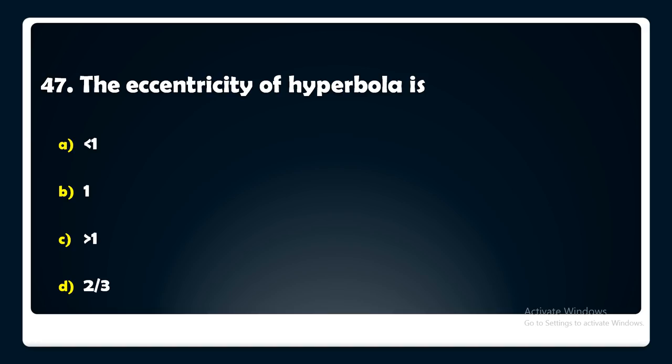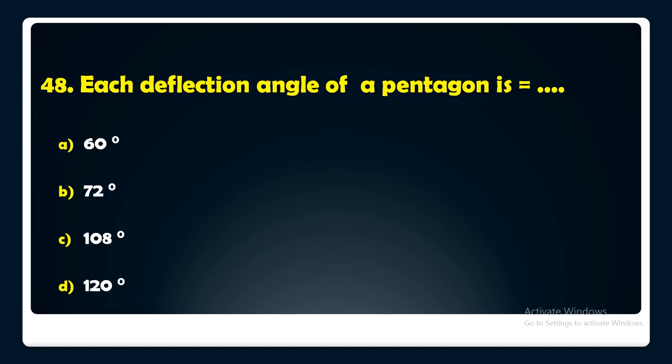Each deflection angle of a pentagon is — 60 degrees, 72 degrees, 108 degrees, or 120 degrees? The answer is: each deflection angle of a pentagon is 72 degrees.